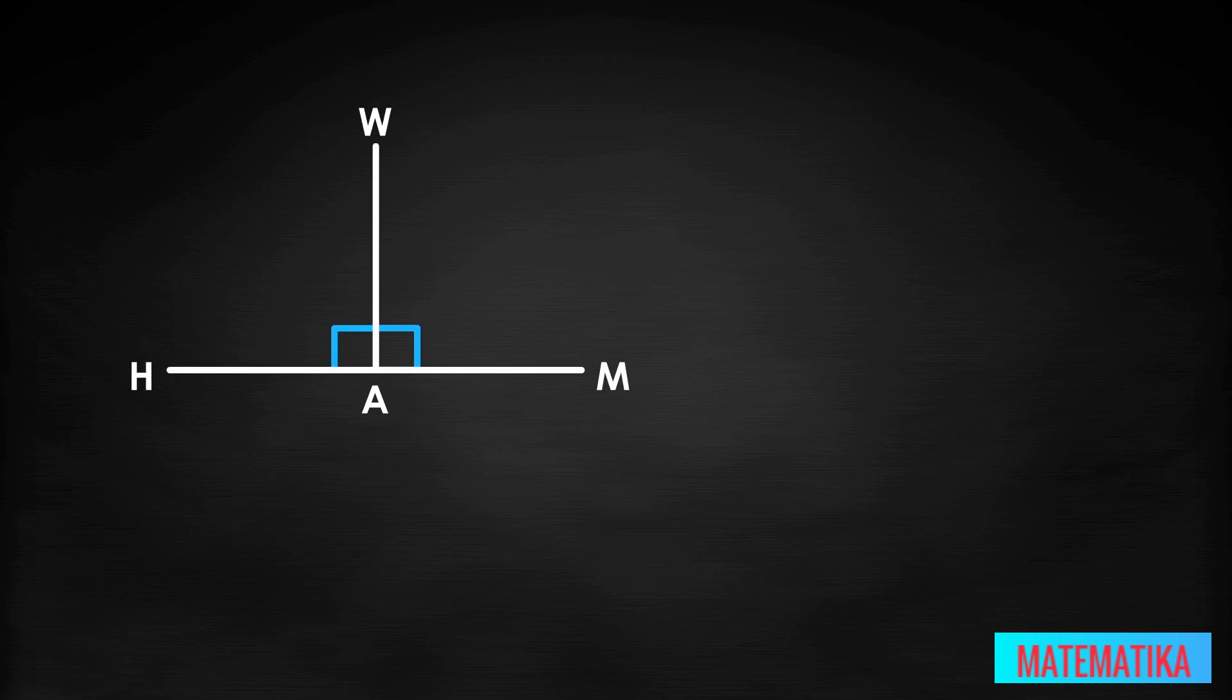This means if we run a line segment from point W to point H, we can create right triangle WHA, and another line segment WM creates right triangle WAM. Now we have two right triangles sharing side WA with all these congruencies.